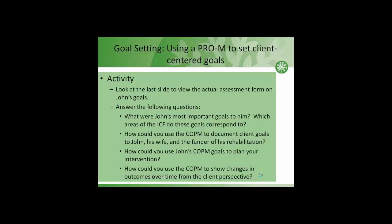As an activity, look back at John's results on the COPM and think about these questions: What were John's most important goals to him? Which areas of the ICF do these goals correspond to? How would you use the COPM to document client goals not only to John but potentially also to his wife or the funder of his rehabilitation? And how would you use these goals to inform your intervention, as well as to show changes in outcomes over time to John and to the funder? Go ahead and try this now and see what you think with the COPM and John's results.